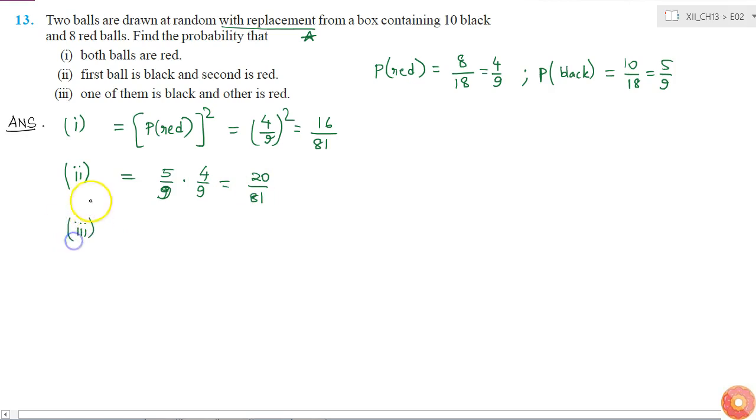And the third part is one of them is black and the other is red. This means that it can be either that first ball is black and second is red, or first is red and second is black. So I have to add two cases: first is black and second is red, plus first is red and second is black. This is equal to 20 by 81 plus 20 by 81, which is equal to 40 by 81. These are our final answers.